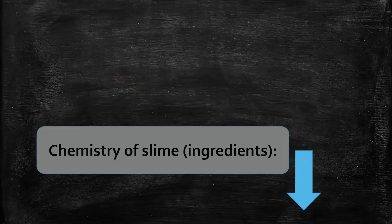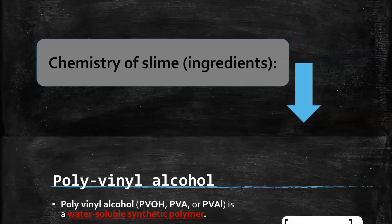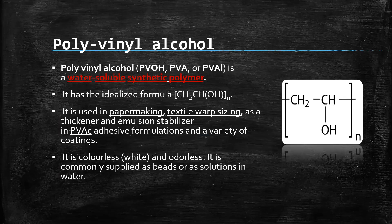Next, the chemistry of slime ingredients. The first ingredient used in slime is polyvinyl alcohol. Polyvinyl alcohol is a water-soluble synthetic polymer with an idealized formula of CH₂-CHOH. It is used in papermaking, textile wrap sizing, and as a thickener and emulsion stabilizer. It is colorless and odorless, and is commonly supplied as beads or as a solution in water.